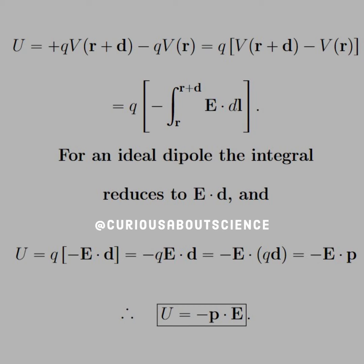For an ideal dipole, however, the integral reduces to E dot D, because the two R points will cancel one another out.